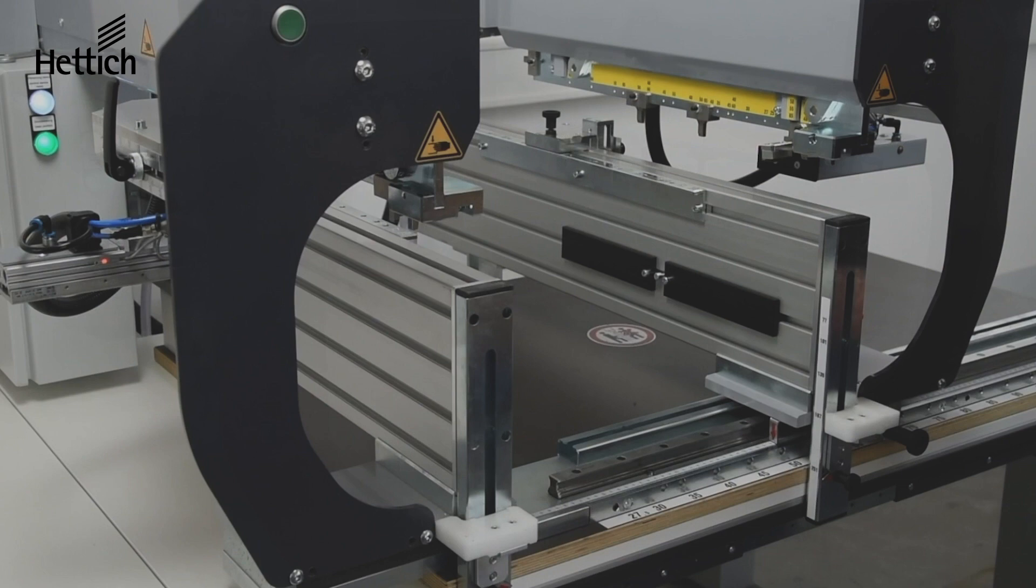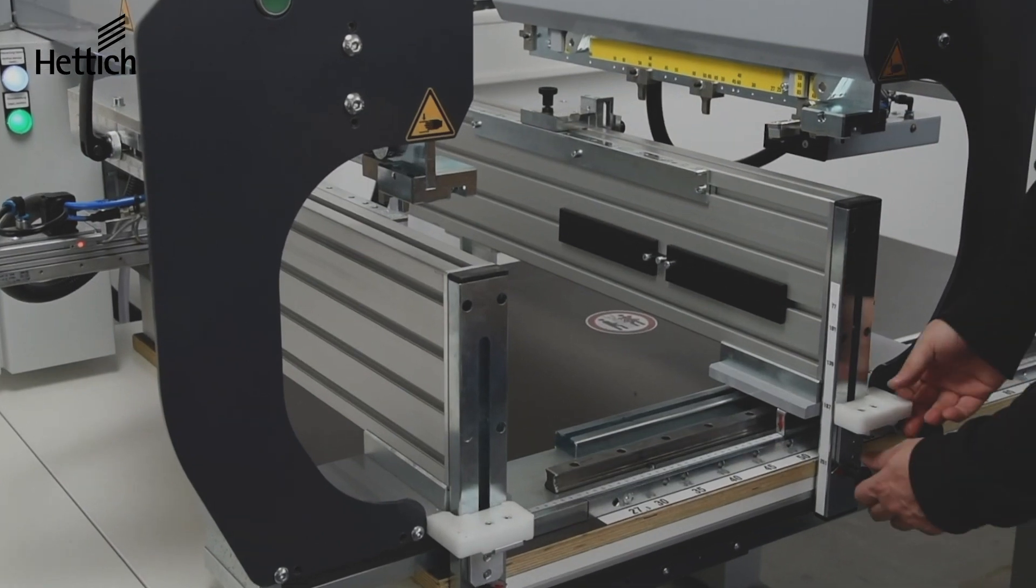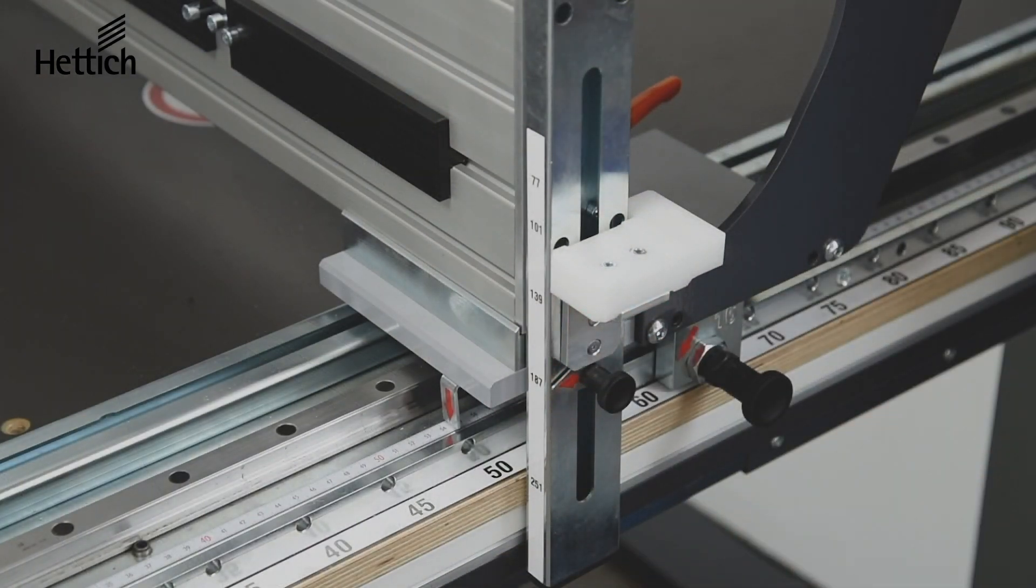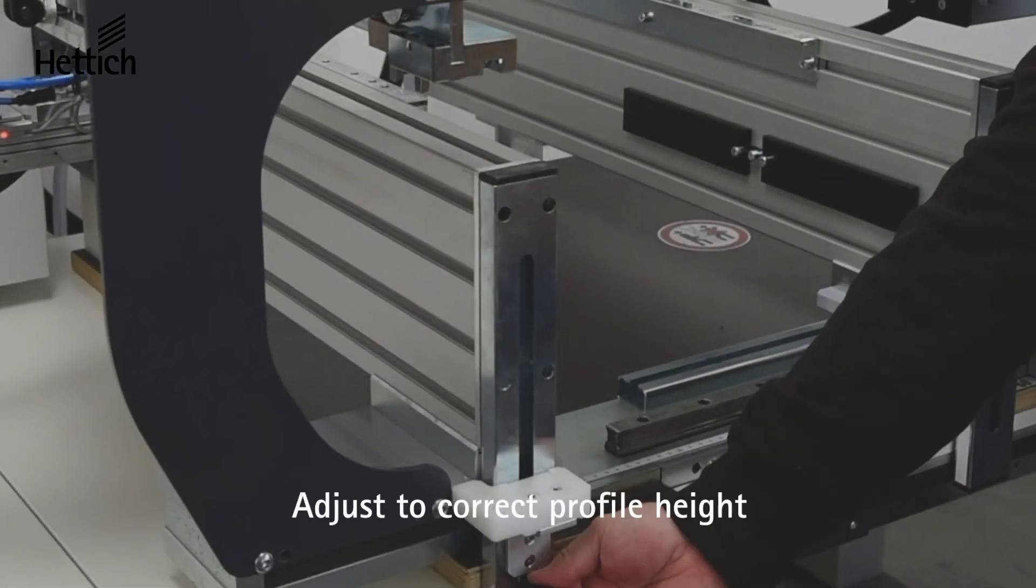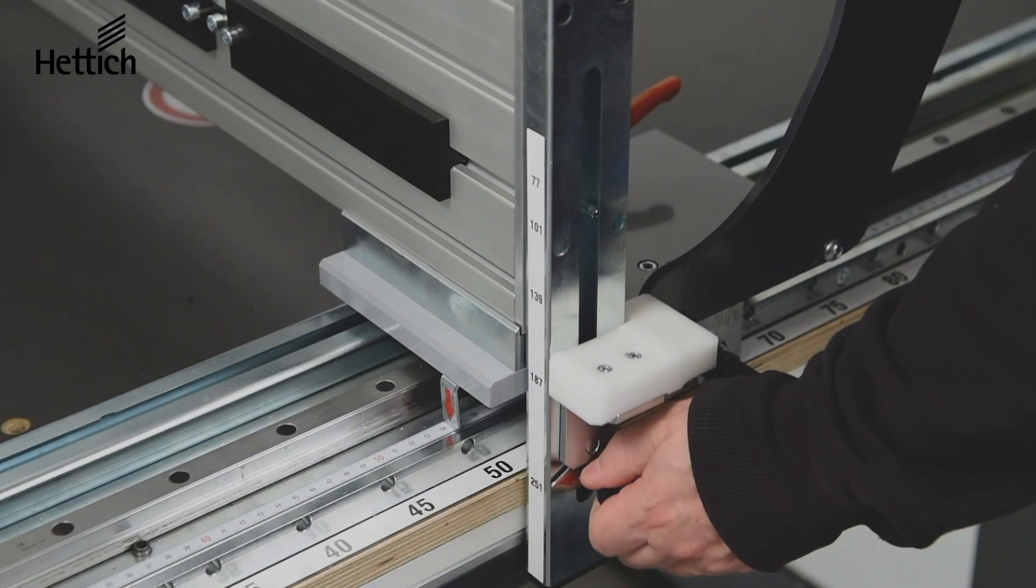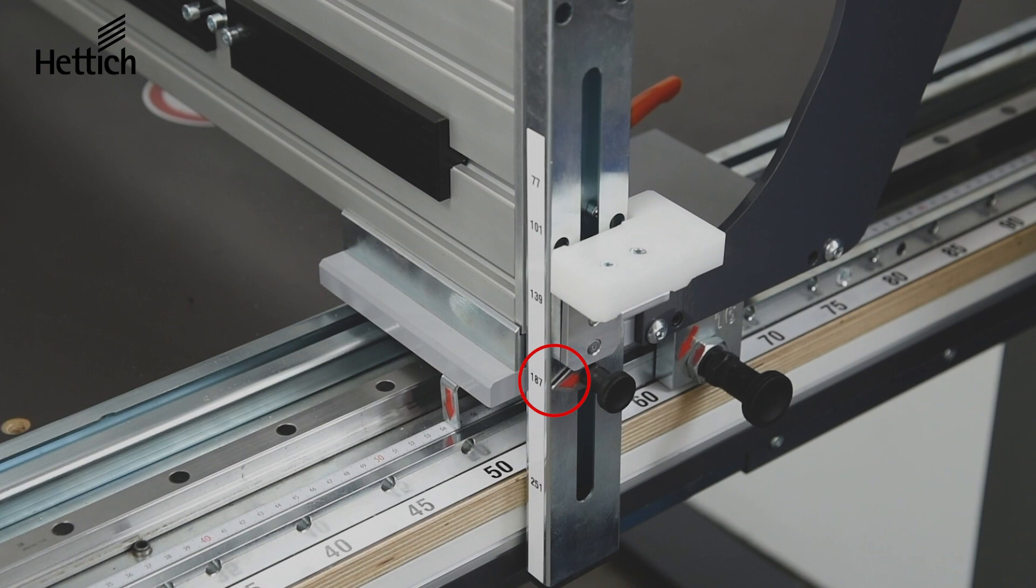The next step is to adjust the bracket that holds the wooden back panel in place according to the height of the profile being used. Simply pull on the black knob near the front of the machine and slide it to the appropriate profile height on the white scale. You can now see the correct height chosen by the red arrow. Make sure to do this on both sides.